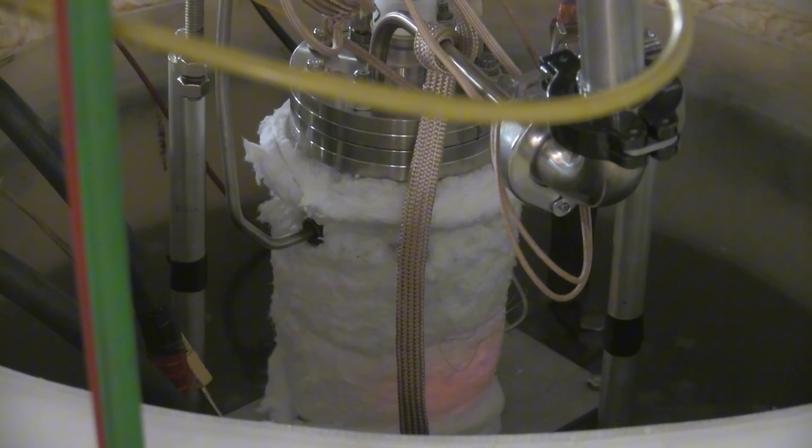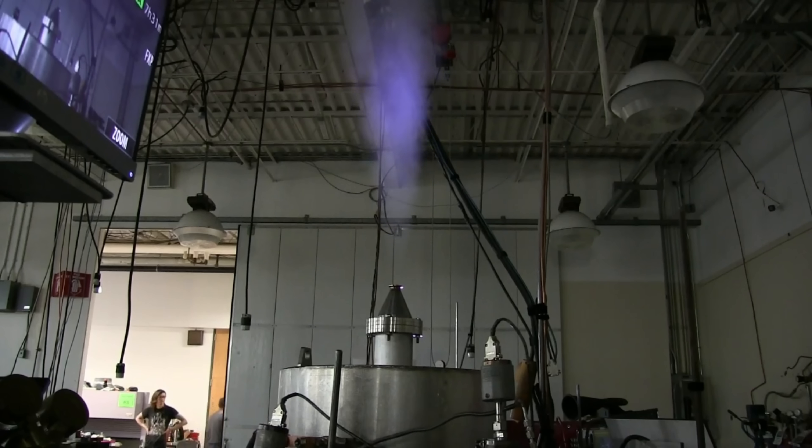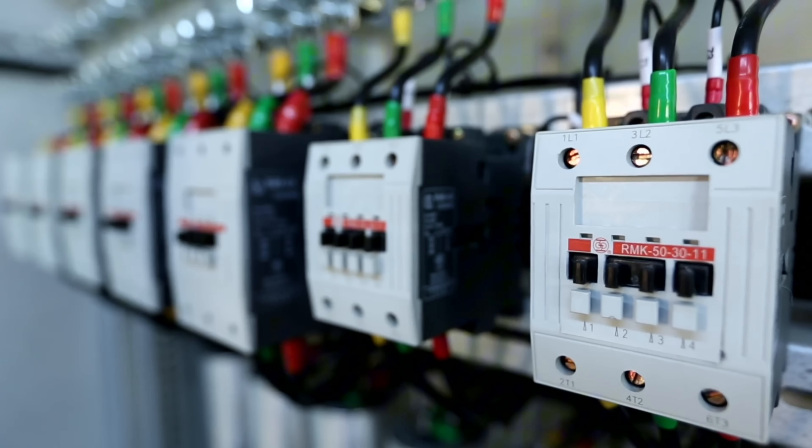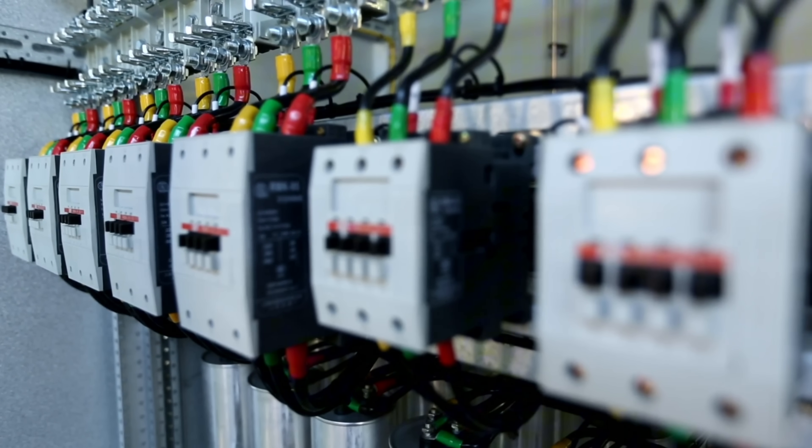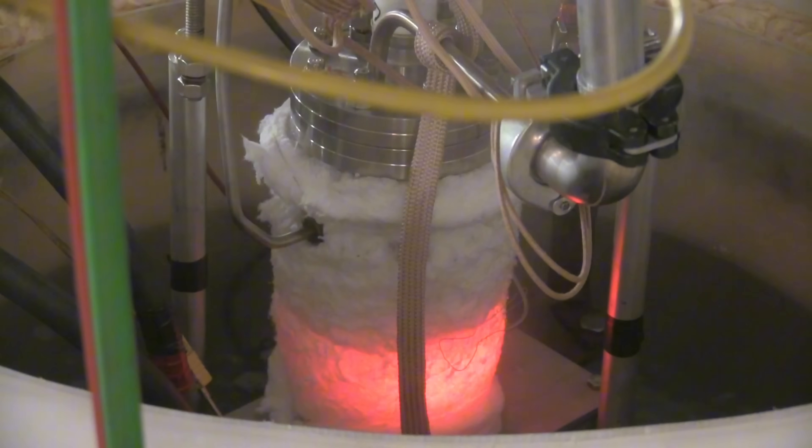So what's the path forward for Brilliant Light Power? The company is currently in the process of scaling up its technology for commercial deployment. They have built several small-scale prototype units that have demonstrated the ability to generate megawatts of electricity. The next step is to construct larger, utility-scale power plants that can feed directly into the grid. Brilliant Light Power has also announced plans to develop smaller, modular units that can power individual homes and businesses. The goal is to have the first commercial Brilliant Light Power systems available to consumers as early as 2025. This will be a monumental shift in how we power our world.